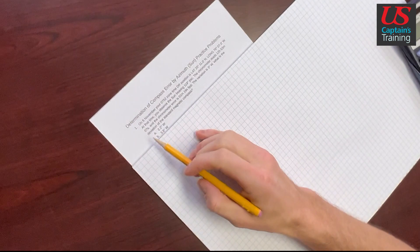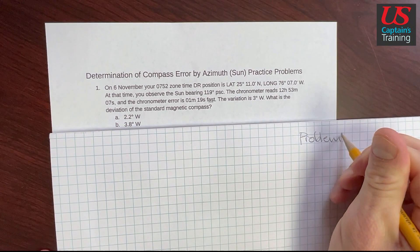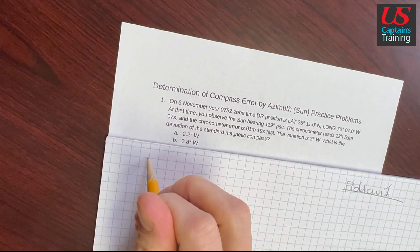Determination of Compass Error by Azimuth of the Sun, Practice Problem 1. So this is Problem 1. And the first thing we need to do is all of our givens. So we need to get all the givens.